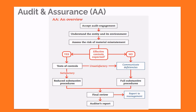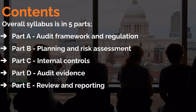All of this will be covered as part of our content — the subject's study materials. Broadly, our overall syllabus can be bifurcated into 5 parts. Part A covers your audit framework and regulation. Part B covers planning and risk assessment. Part C covers internal controls. Part D covers audit evidence. Part E covers review and reporting.